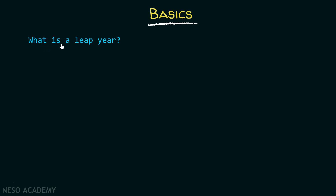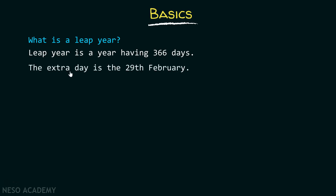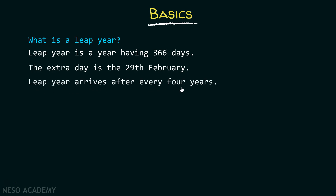Let's first try to understand what is a leap year. A leap year is a year having 366 days. The extra day is the 29th of February. A leap year arrives after every 4 years — it has exactly 366 days, with the extra day being the 29th of February.